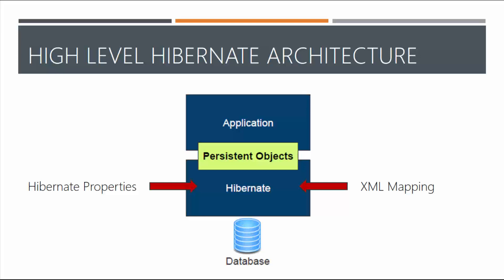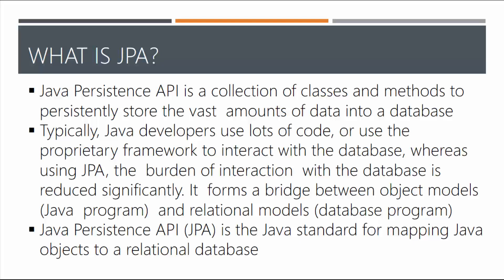The persistent objects is where the concept of Java Persistence API comes into play. So what is the JPA? The Java Persistence API is simply a collection of classes and methods to persistently store vast amounts of data into a database. It's the bridge between the objects and the database itself. Typically Java developers use lots of code or proprietary frameworks like JDBC to interact with the database, whereas using JPA the burden of interaction is reduced significantly. It forms a bridge between object models — our main program — and relational models, such as one-to-one, one-to-many, or many-to-many relationships.